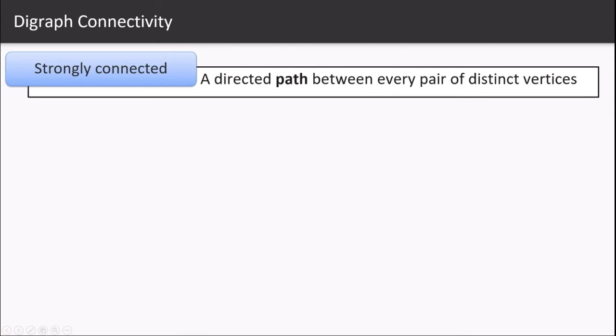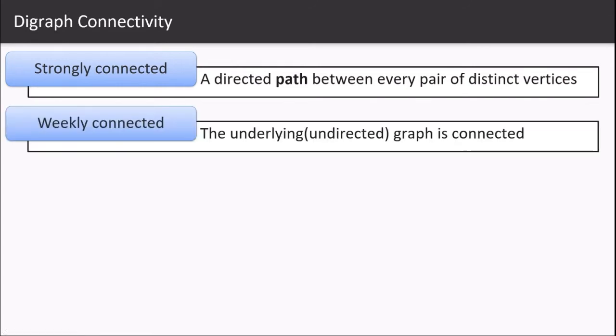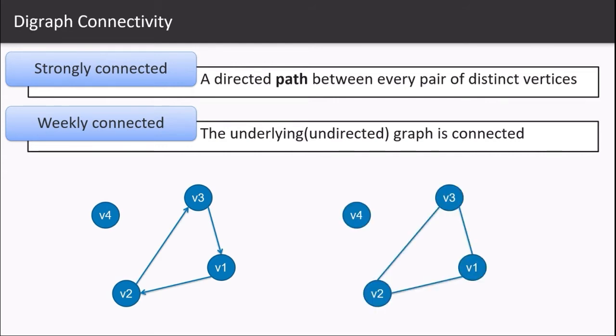A digraph is said to be strongly connected if there exists a directed path between every pair of distinct vertices. Similarly, it is weakly connected if the underlying graph is connected. So let's say this is a graph and this is the underlying graph of the given. Is it strongly connected or weakly connected? Let's see.